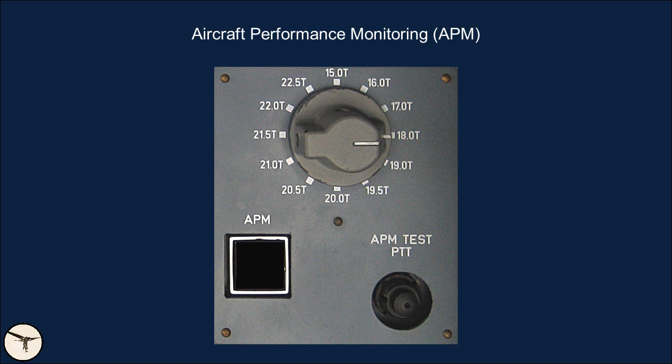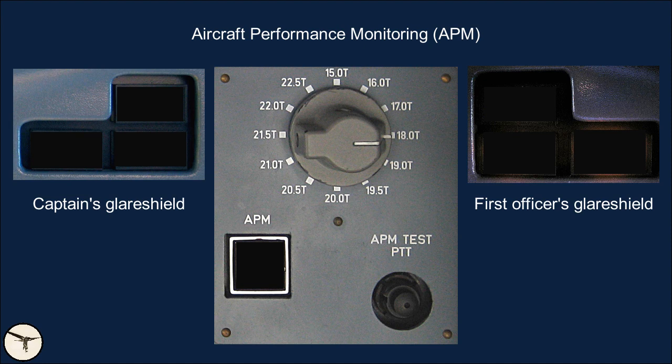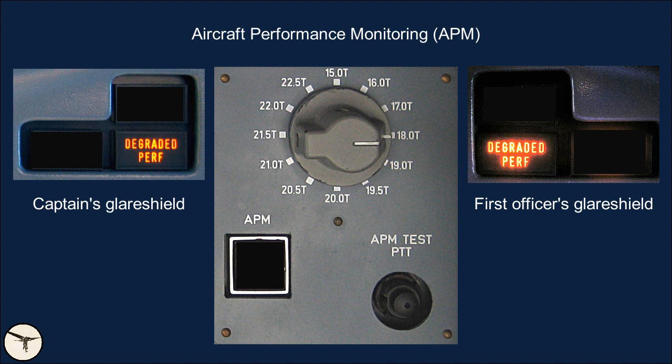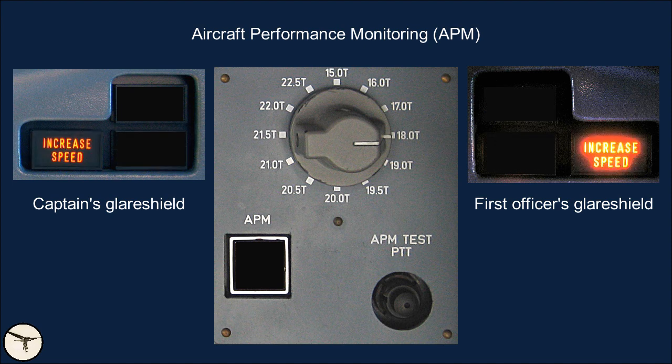The rotating knob on the APM is used to set the weight of the aircraft before takeoff. The APM will then calculate what rate of climb and crew speed you should have when the wings are clean of ice. If ice accumulation results in reduced performance, the pilots are given orders in the form of three captions under the glare shield: the first level is crew speed low, then follows degraded performance, and finally increased speed.